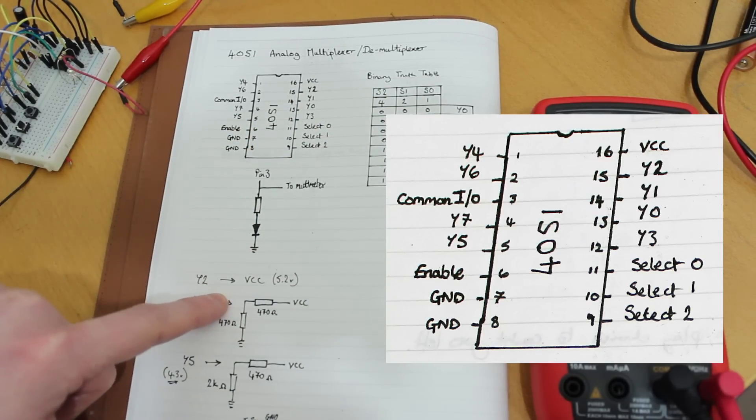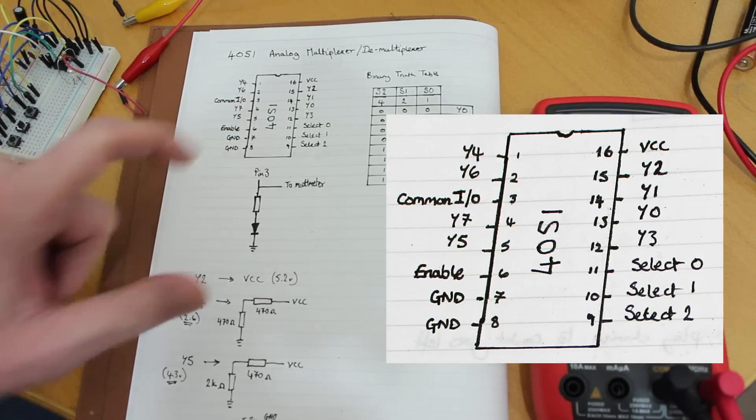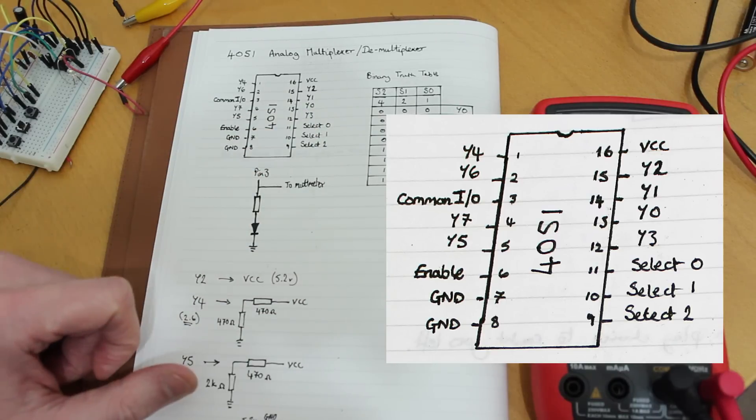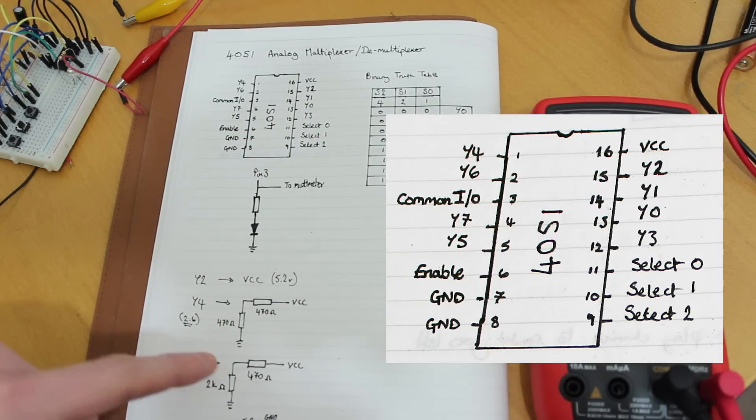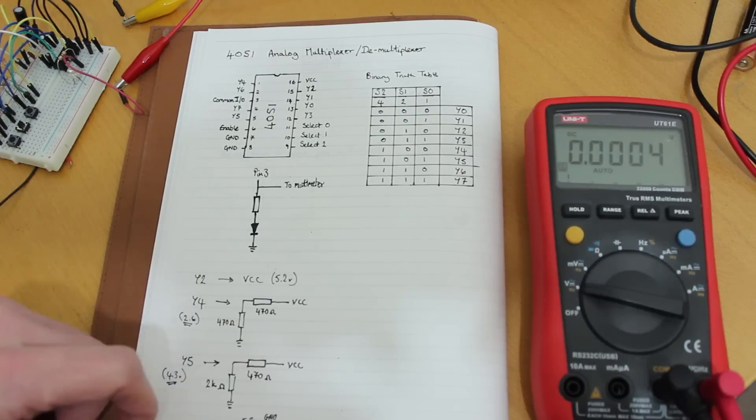Now I've rigged up a little circuit just to demonstrate the common I.O. So I'm using that as an output and these separate ones as inputs. And we're using some voltage dividers. So I'm just using some resistor voltage dividers here. I've got them all detailed down here, but we'll go through that as I show you the circuit.